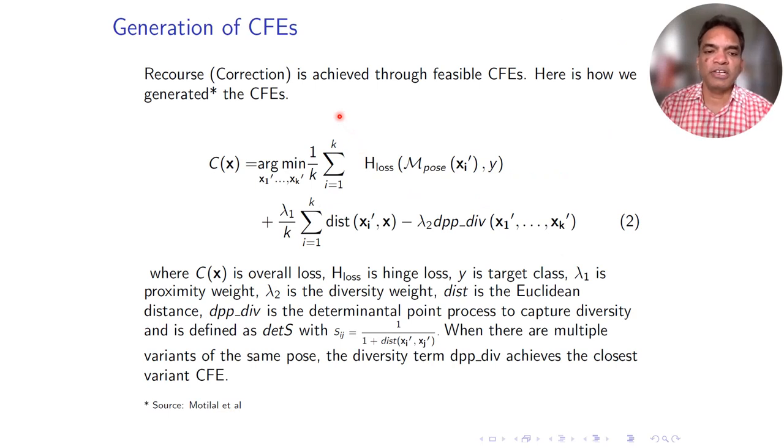Here is how we generate the counterfactuals based upon Mothilal et al. The first term is the hinge loss for standard prediction versus the ground truth class label. The second term is important, which is the proximity loss. Our goal is to select the counterfactual examples which are closer to the given input incorrect pose. In this case, the Euclidean distance. We also have the diversity term. The diversity term is about generating many diverse examples and not from the same density of counterfactual examples.